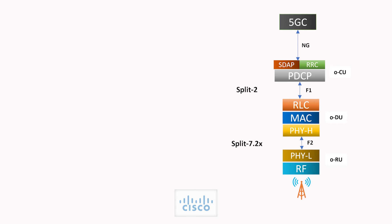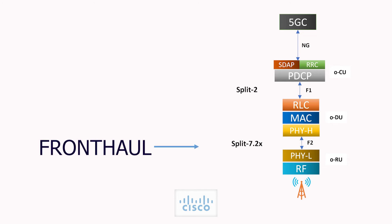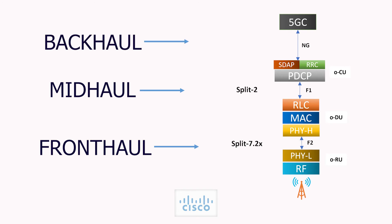The most common implementation of this Open Fronthaul functional split in a radio access network is in the form of a double split, with 7.2x as the fronthaul split and split 2 implemented in mid-haul.